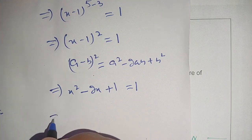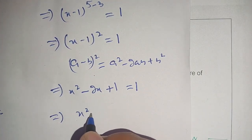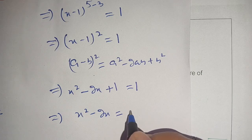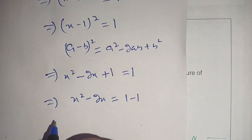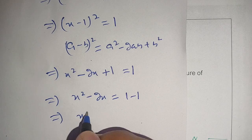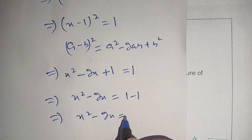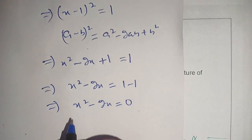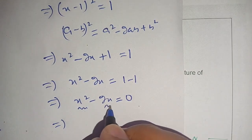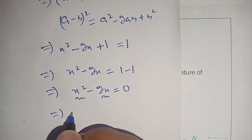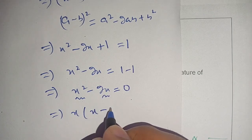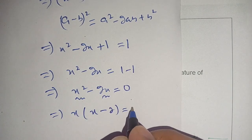Now we have x squared minus 2x is equal to 1 minus 1, so our equation becomes x squared minus 2x is equal to 0. Taking x common from both terms, we get x times (x minus 2) is equal to 0.